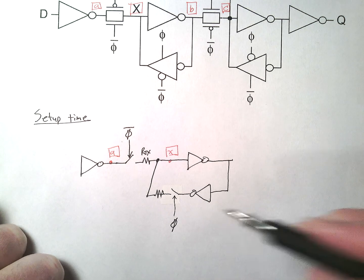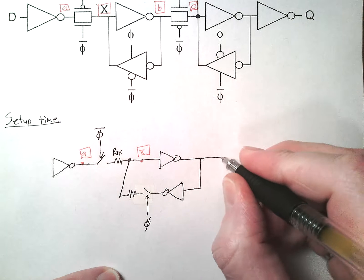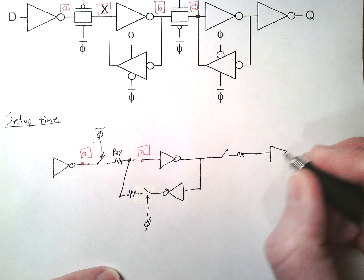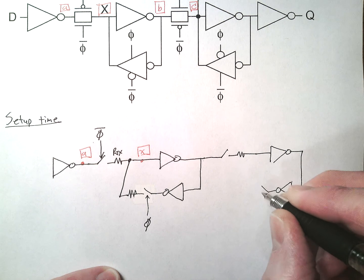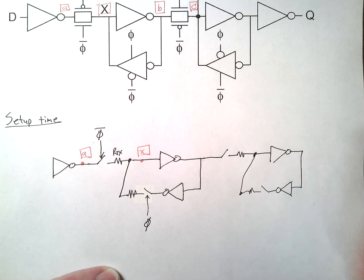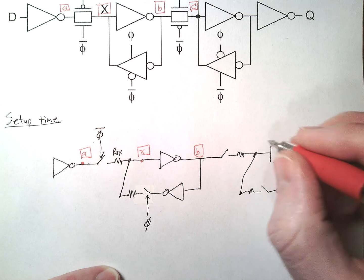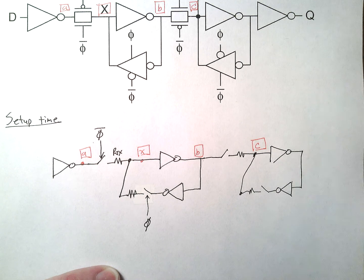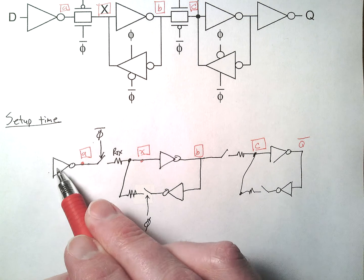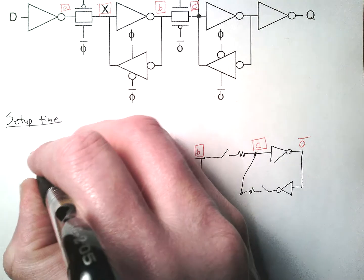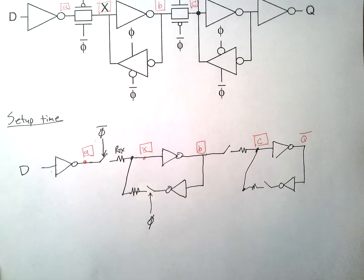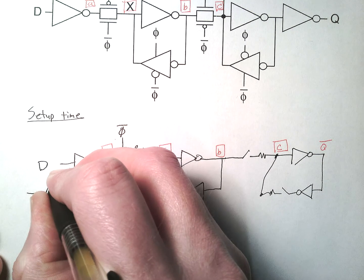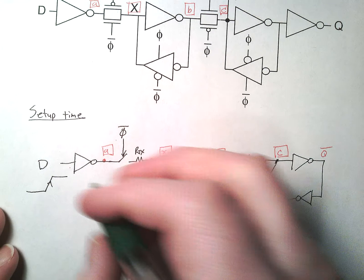We have this feedback loop here, and that's an important part of how we look at the delay through here. Another switch and a resistor, one more feedback loop — inverter, switch, resistor. So this is node B, node C, and then Q-bar. Three inverters here. Here's our input D. What happens is when D changes — let's just make D rise — we have to propagate this signal through here.